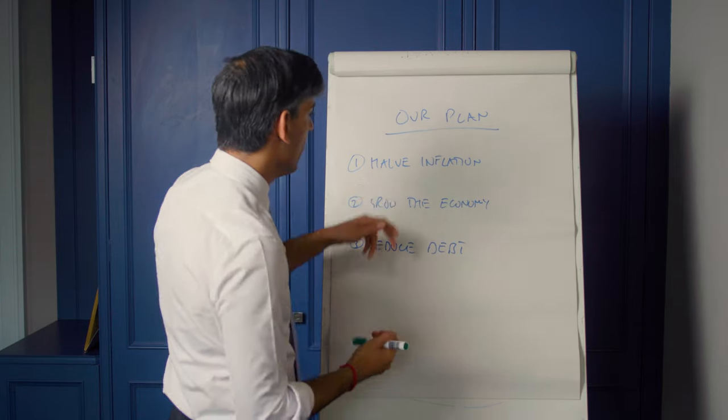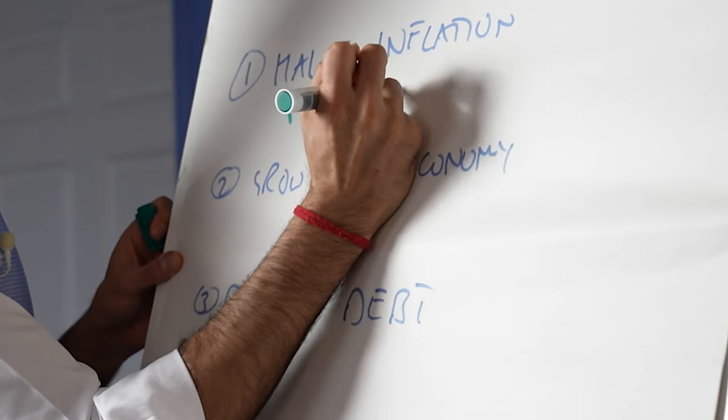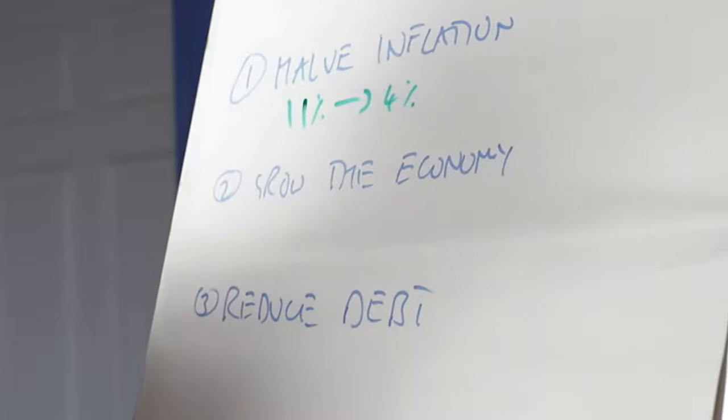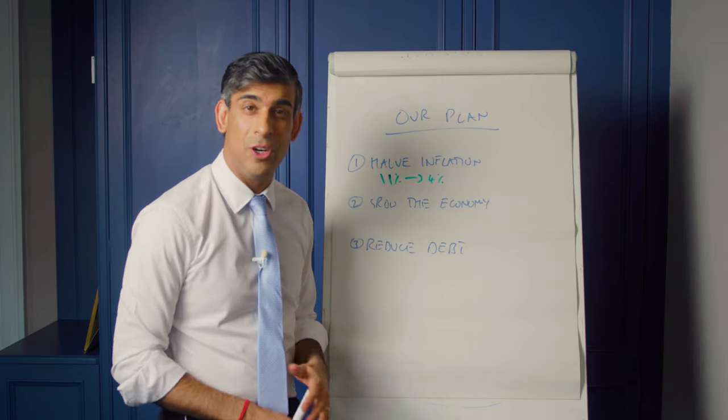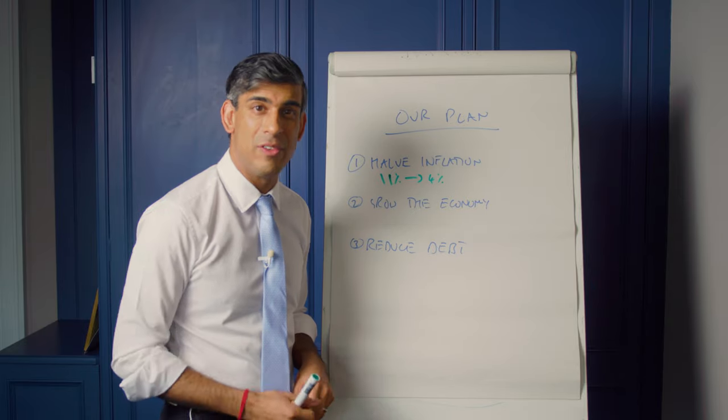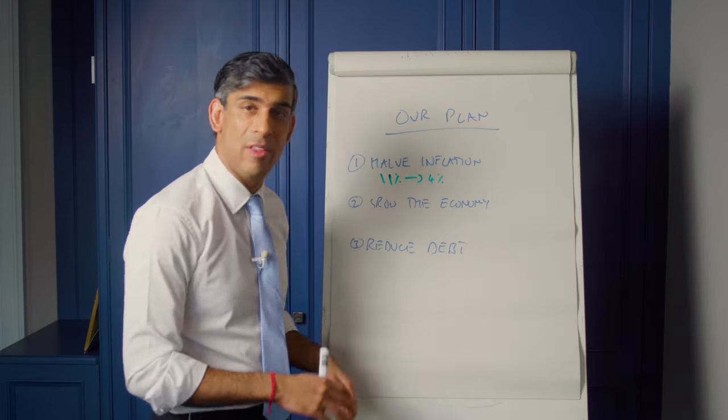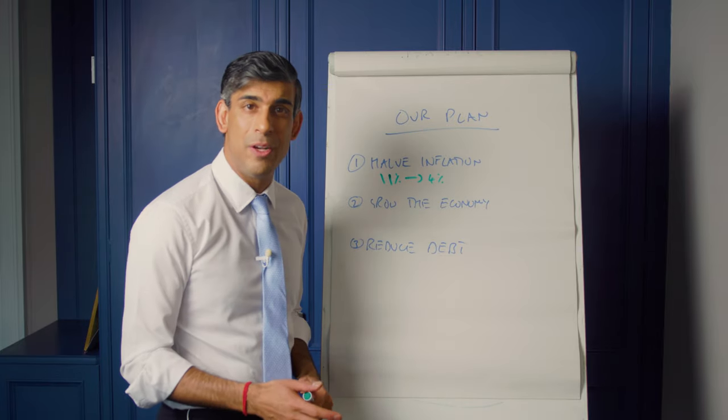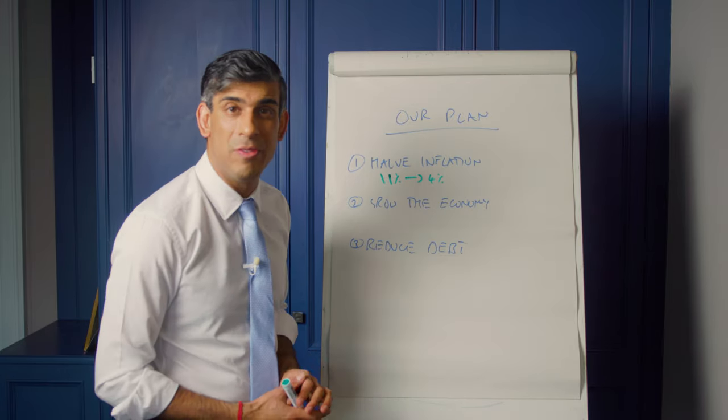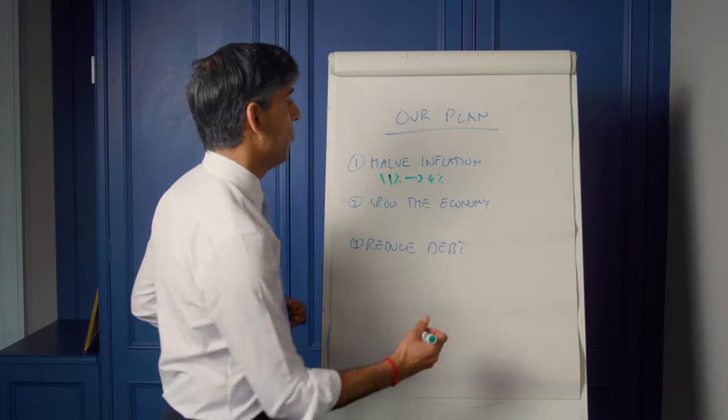Well, the ONS recently said that inflation has fallen from 11% down to 4%. The OBR have just said that they expect us to hit our 2% inflation target a year earlier than they previously thought, in just a few months' time. The Bank of England recently said that mortgage rates have started to fall. Ofgem have said that energy bills are going to fall by almost £250 in April. And the recent budget froze fuel duty.